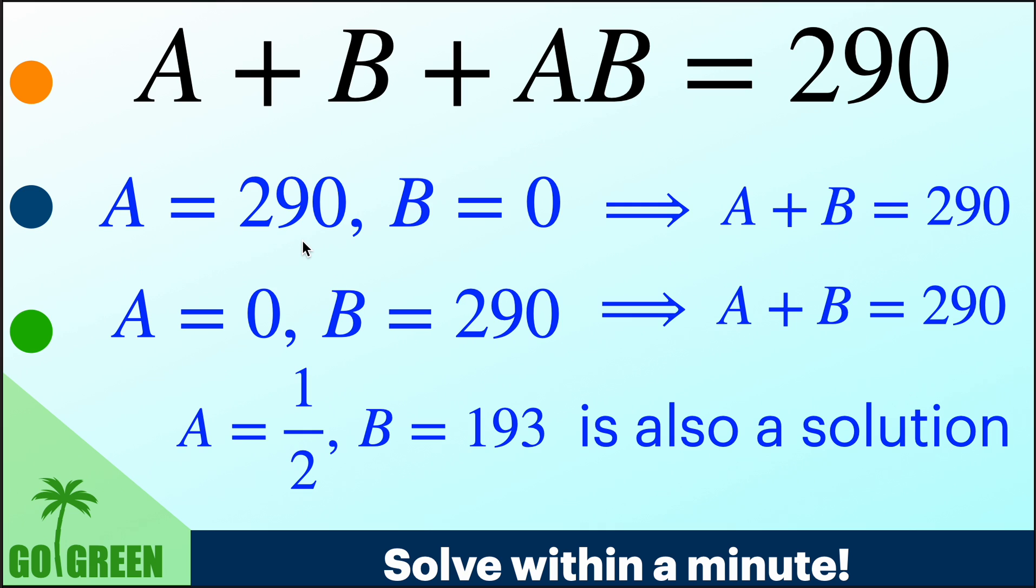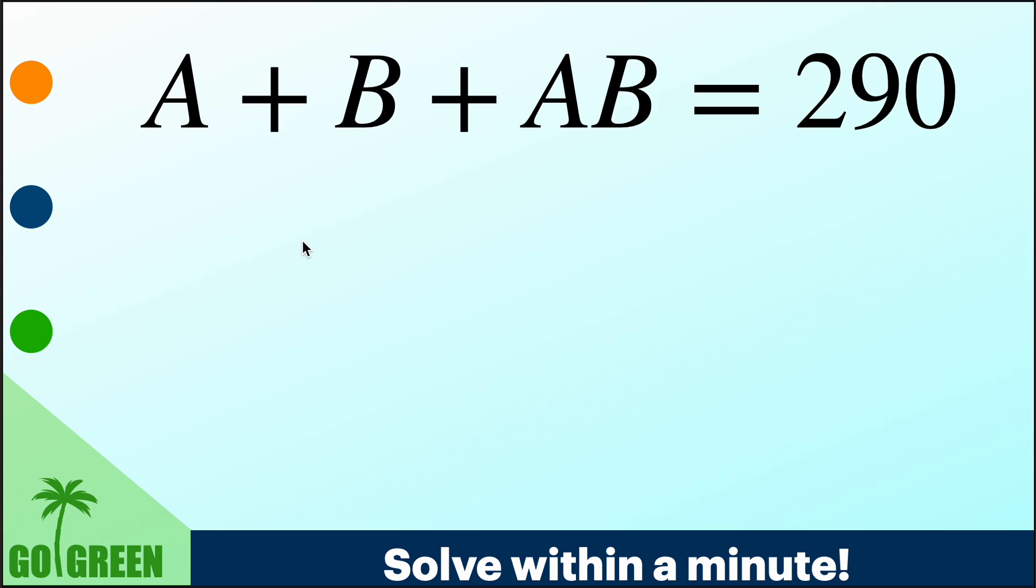We'll see the trick and then the problem is nothing. So the problem is A plus B plus AB equal to 290. What we'll do now is, we'll add 1 to both the sides. Then what it becomes? A plus B plus AB plus 1 is 290 plus 1.